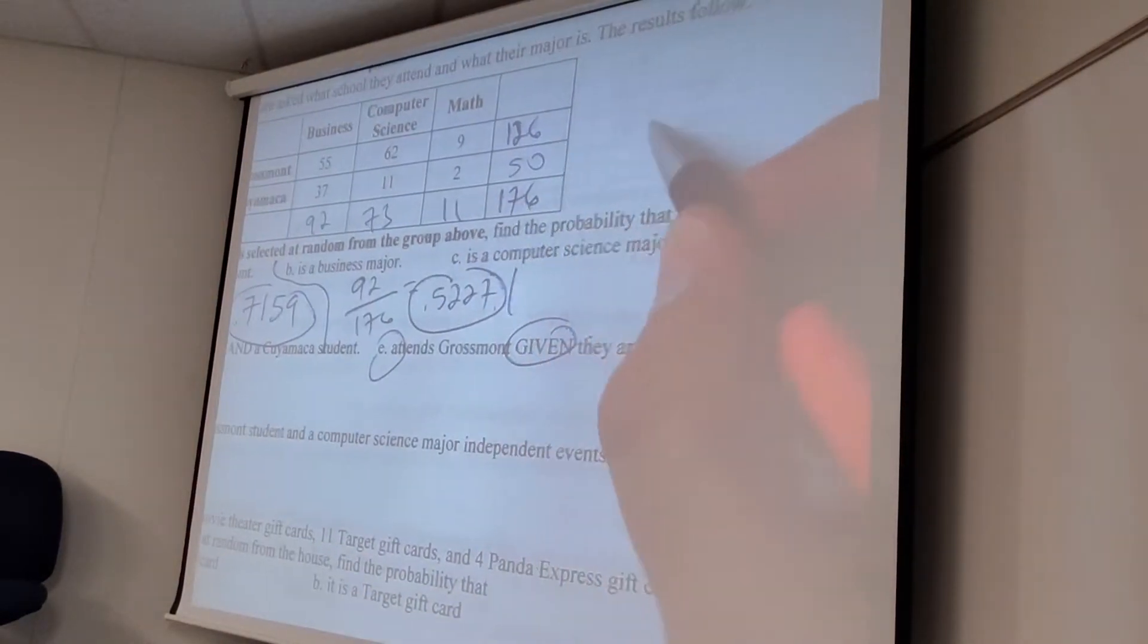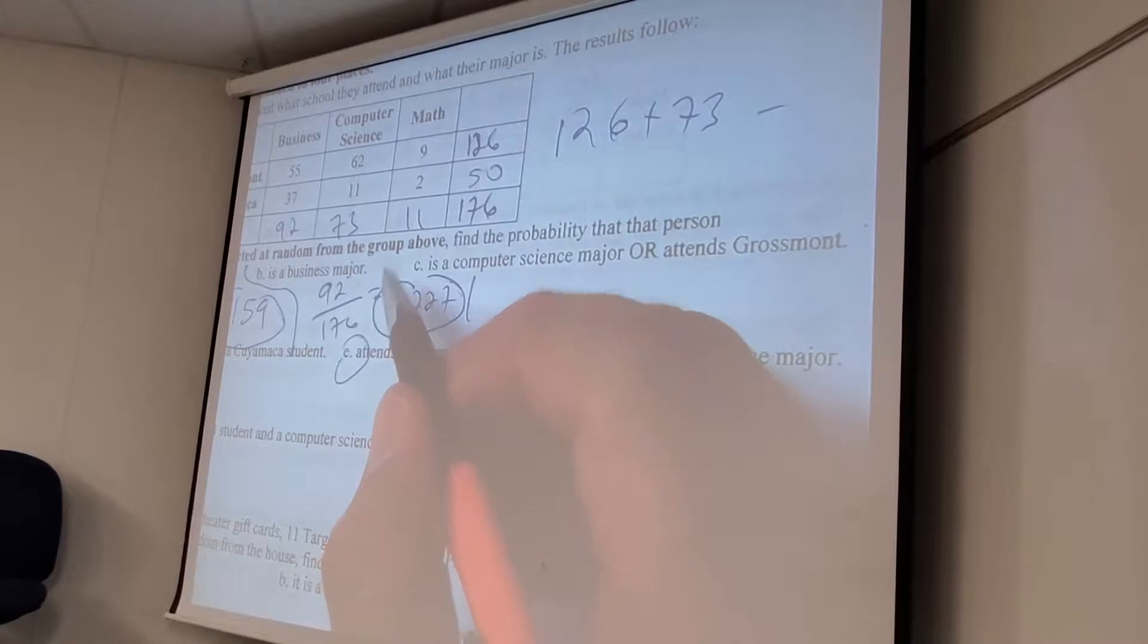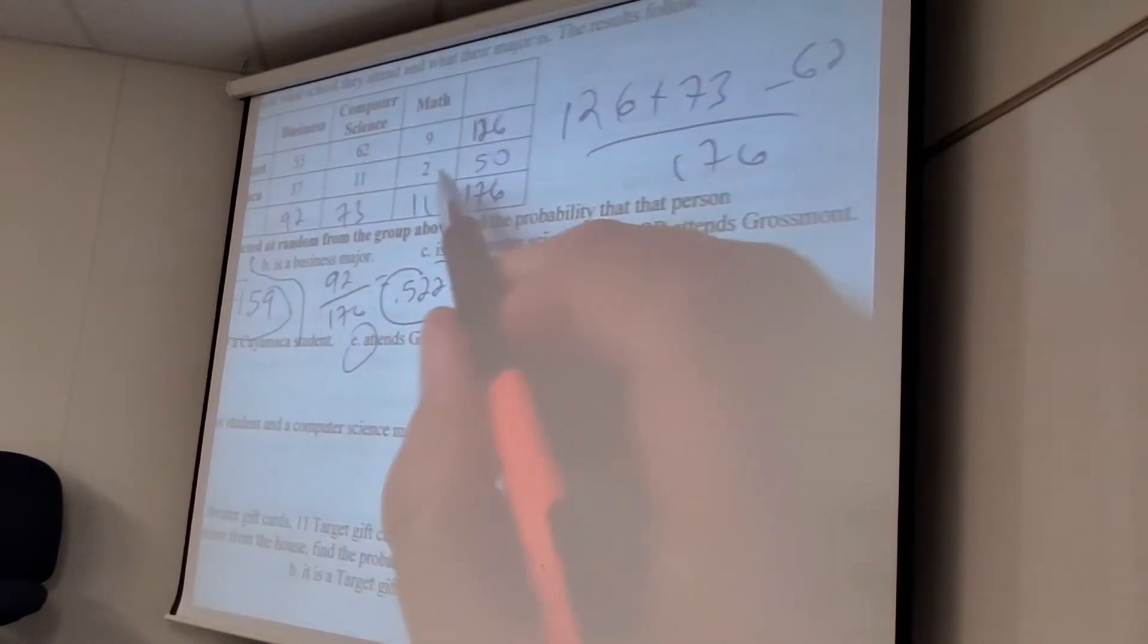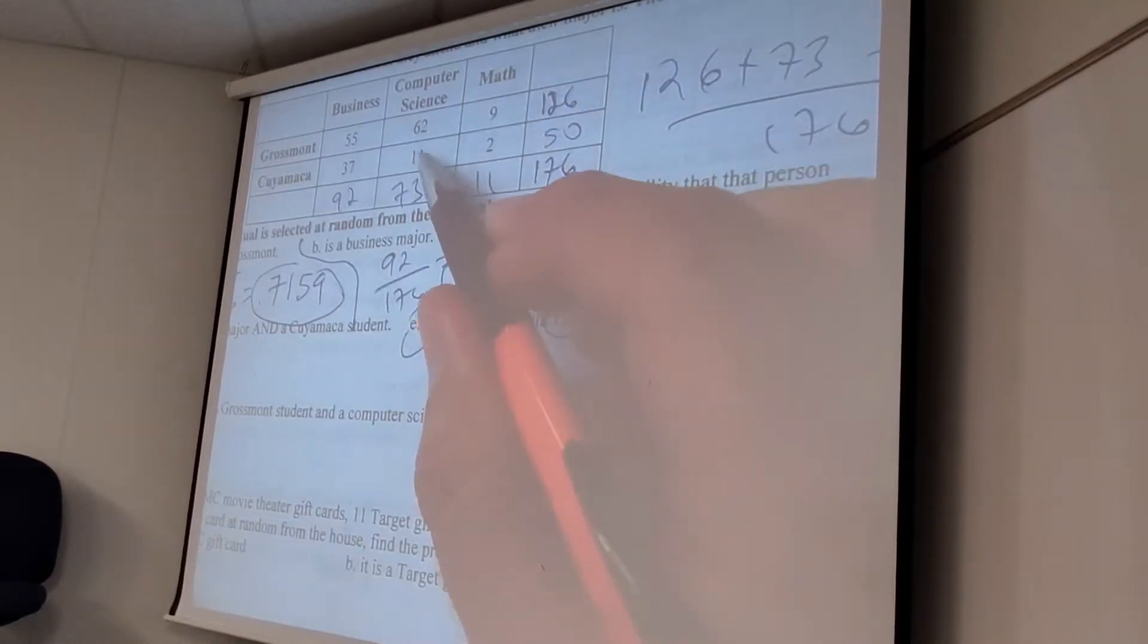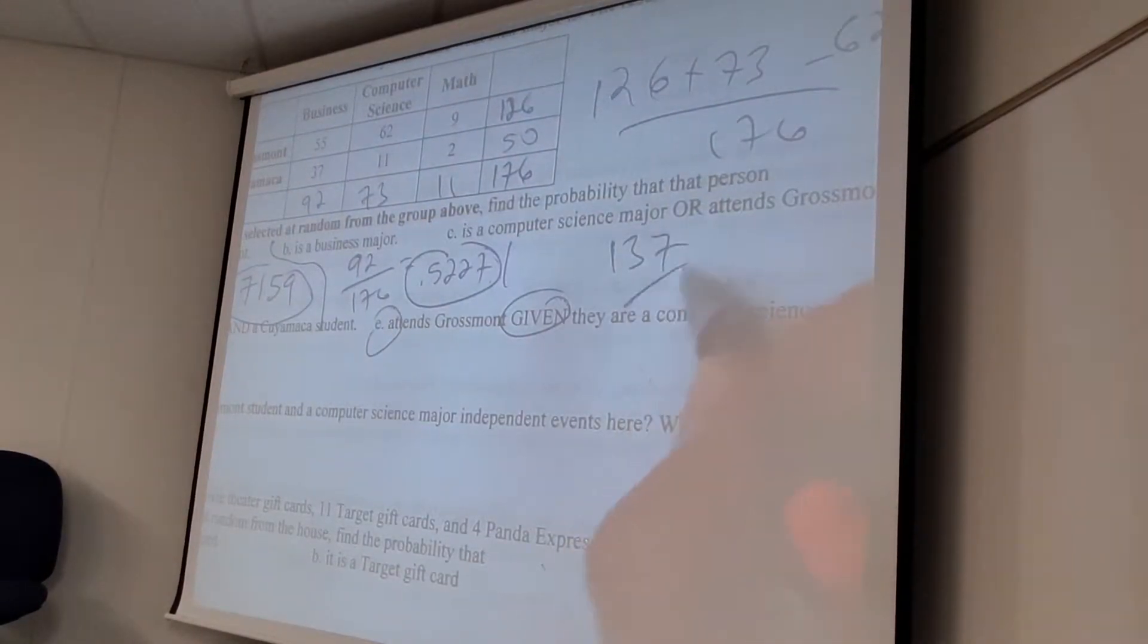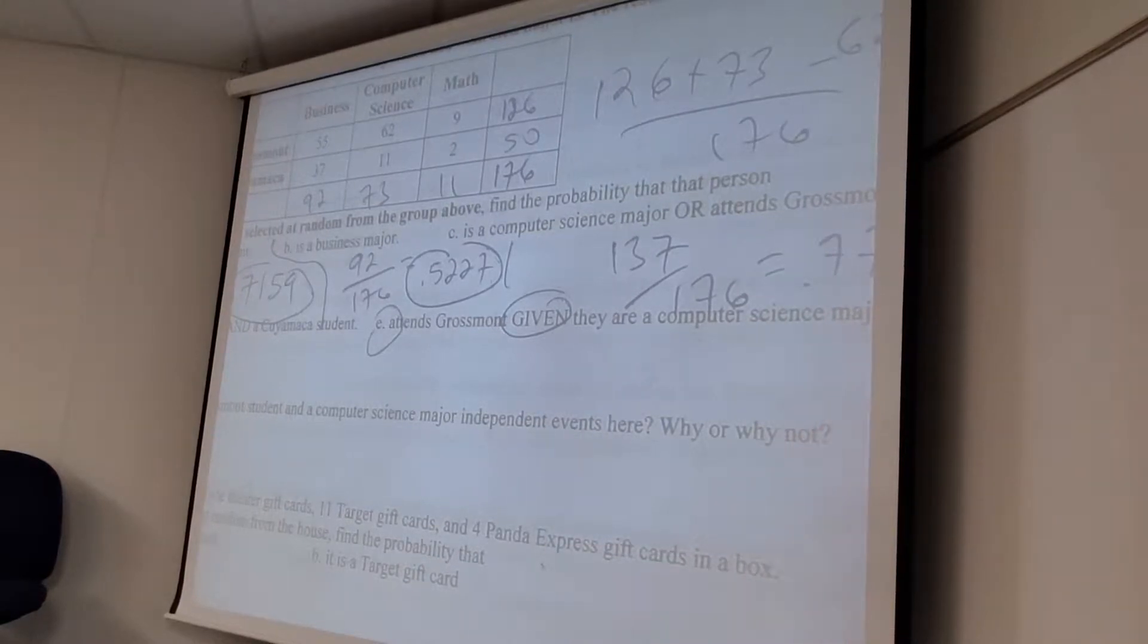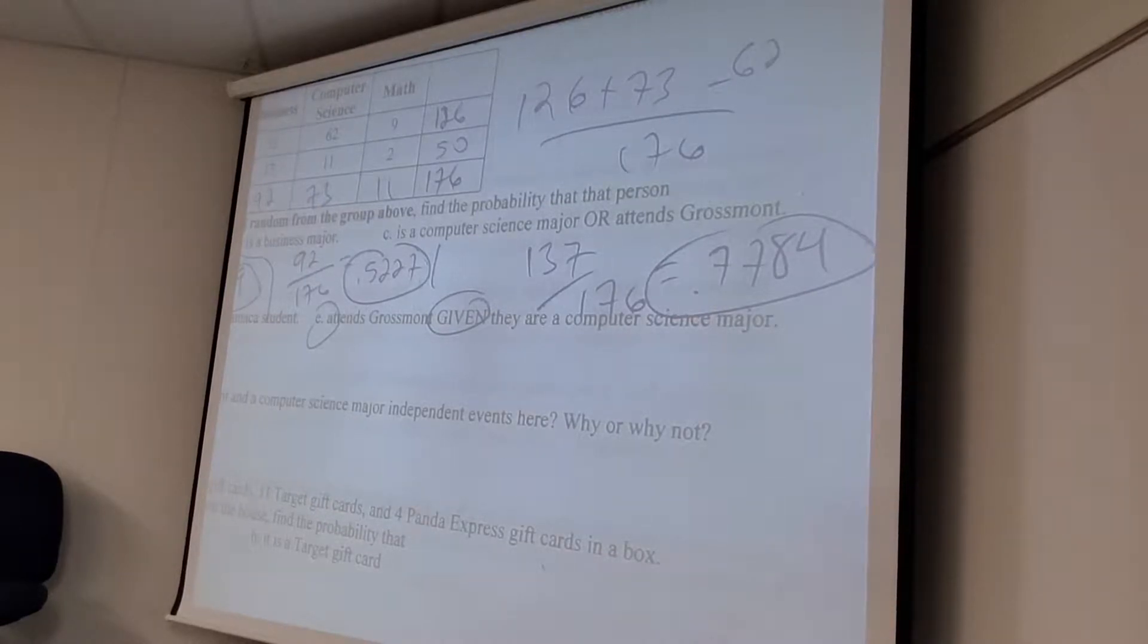So, either you can do 126 plus 73, but then you better subtract off how many that you counted twice. 62. If I count these people, these people, I counted them twice. Out of 176. Or you can just do 126 Grossmont students, how many computer science people have I not counted yet? 11. Either way, you end up with 137 out of 176, which is whatever the hell it is. 7, 7, 7, 8, 4? Okay. I like it.